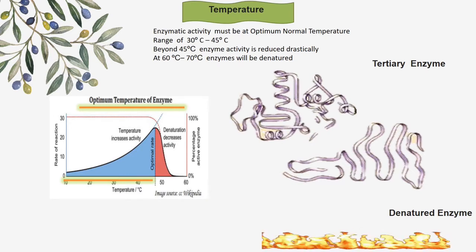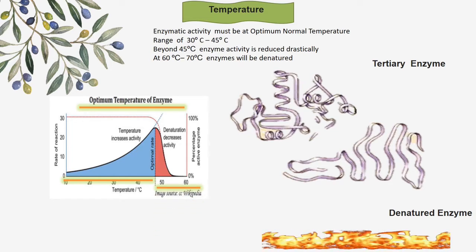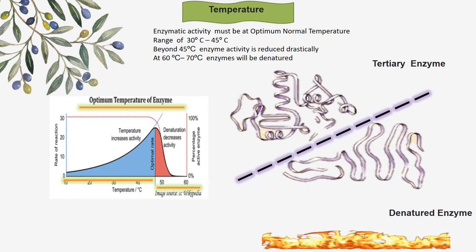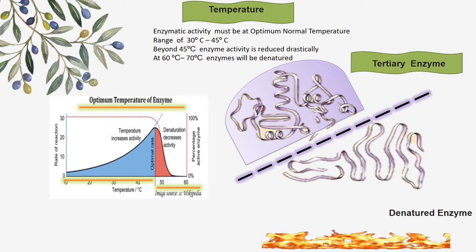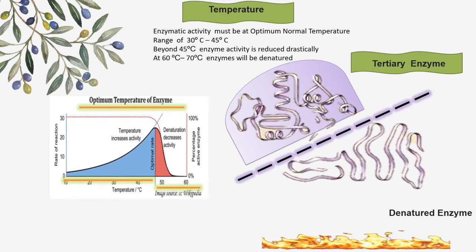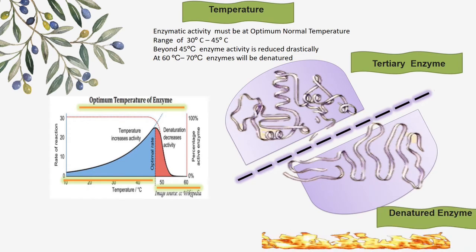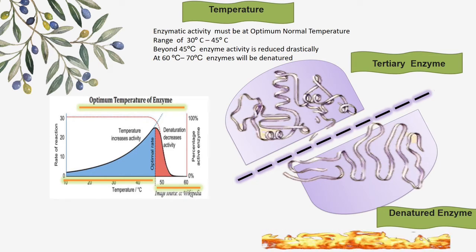Beyond the dotted midline of the wave peak, a red colored area appears indicating a drastic temperature of 45 to 60 degrees centigrade and beyond. The illustration on the right portrays the normal enzymatic structure of a tertiary enzyme at optimum temperature, whereas the lower enzyme beyond the dotted broken line depicts a denatured enzyme as a result of exposure to a drastic temperature of 60 degrees and above.